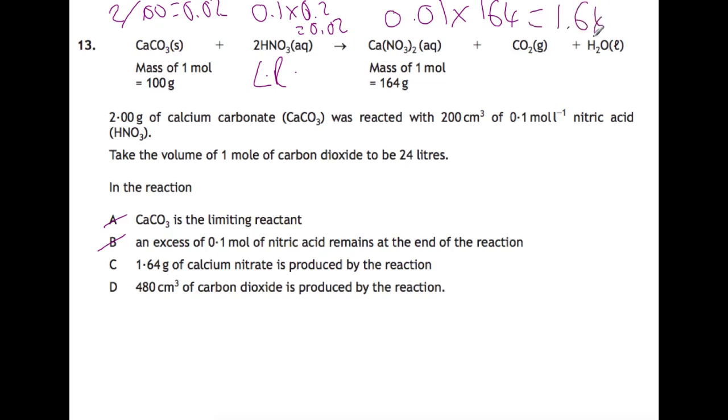Finally for the carbon dioxide, if you've got two moles of nitric acid you get one mole of carbon dioxide. So we had 0.02 moles, so we'd have 0.01. If we multiply that by the 24, then you would find that you actually get 240 centimeters cubed rather than 480.